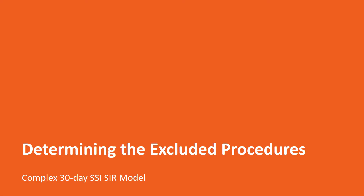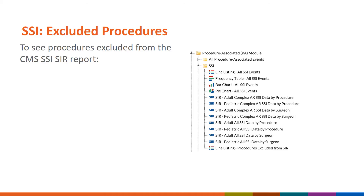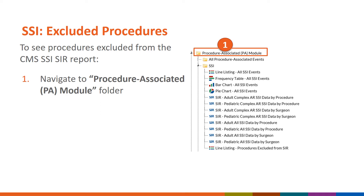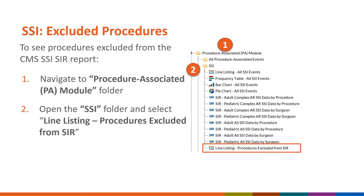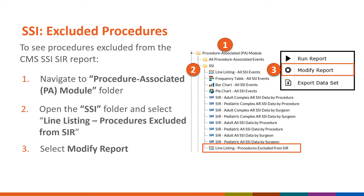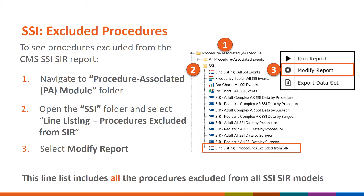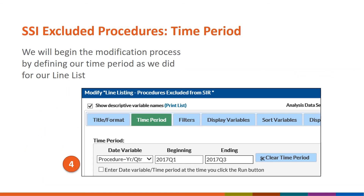We will now review the steps for determining the excluded procedures in the complex 30-day SSI-SIR model. NHSN makes it easy for you to identify the procedures excluded from the SIR calculations. Navigate to the Procedure Associated Module folder in the Analysis screen. Open the SSI folder. At the bottom of the SSI folder, right-click on the line listing Procedures Excluded from SIR Report in the panel and select Modify Report. This list includes all SSI procedures excluded from every SSI-SIR model. You would like to see only the procedures excluded from the complex 30-day SSI-SIR model.